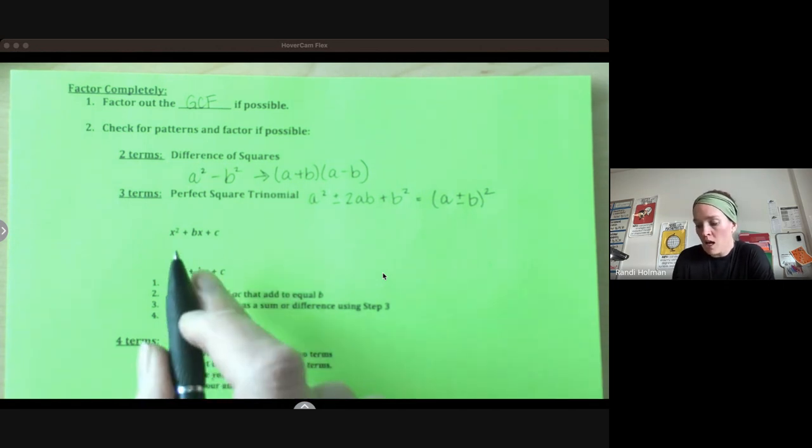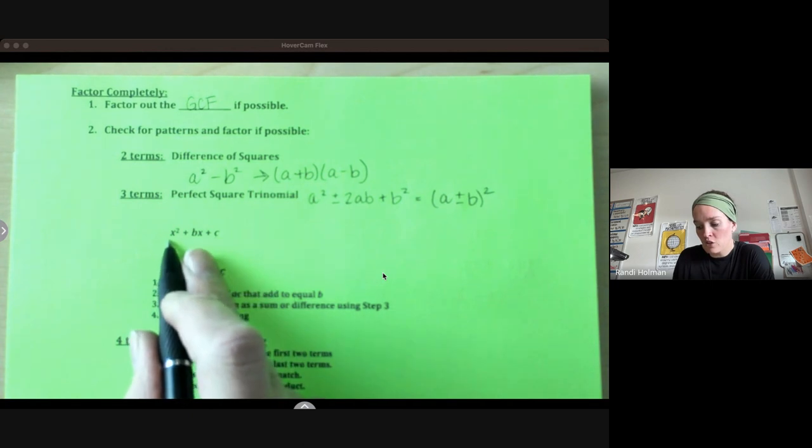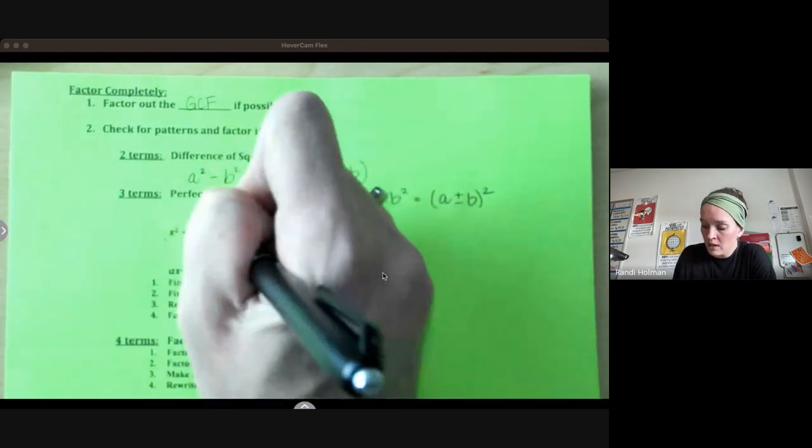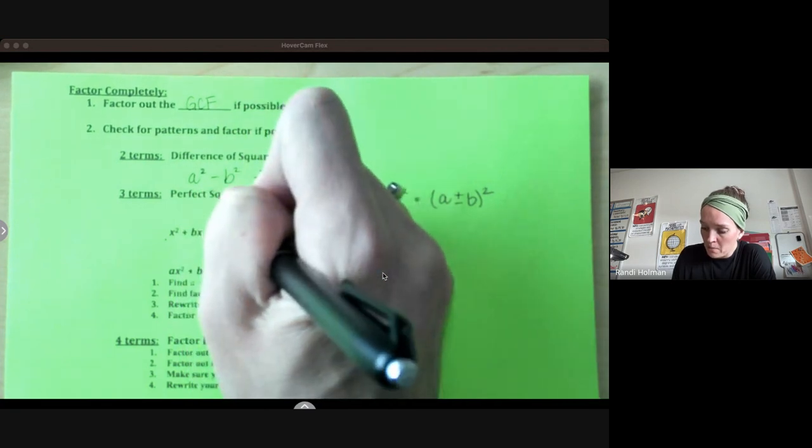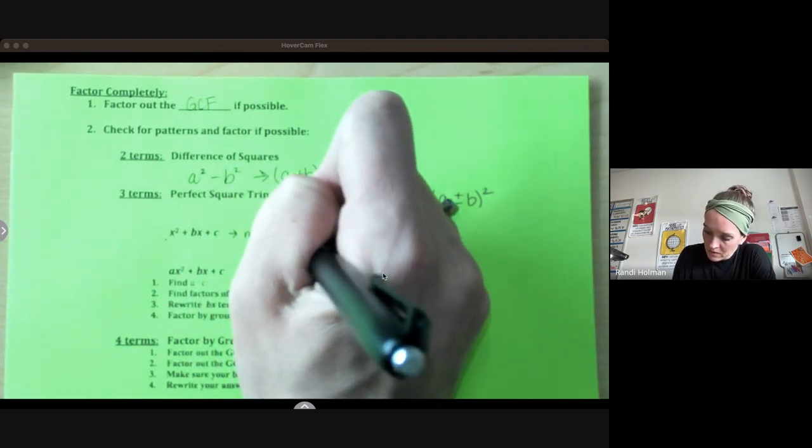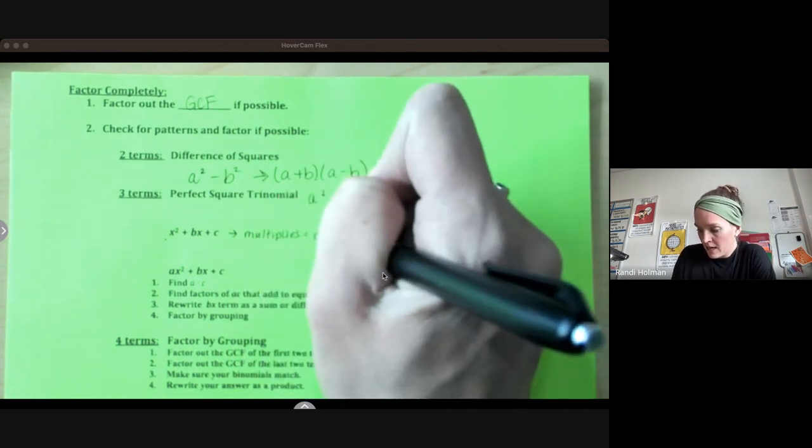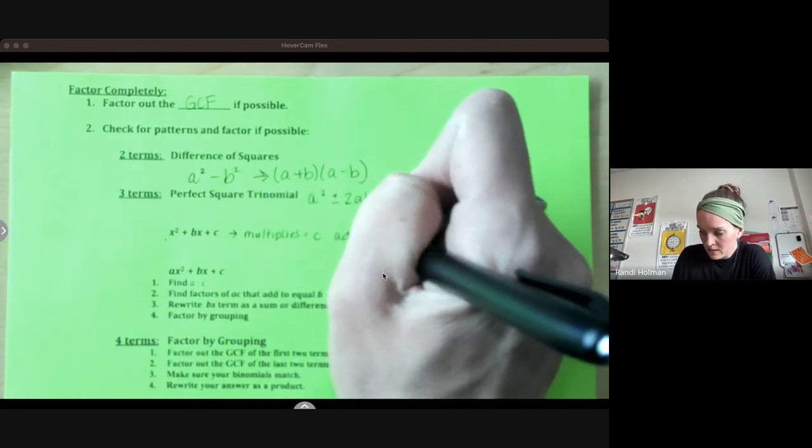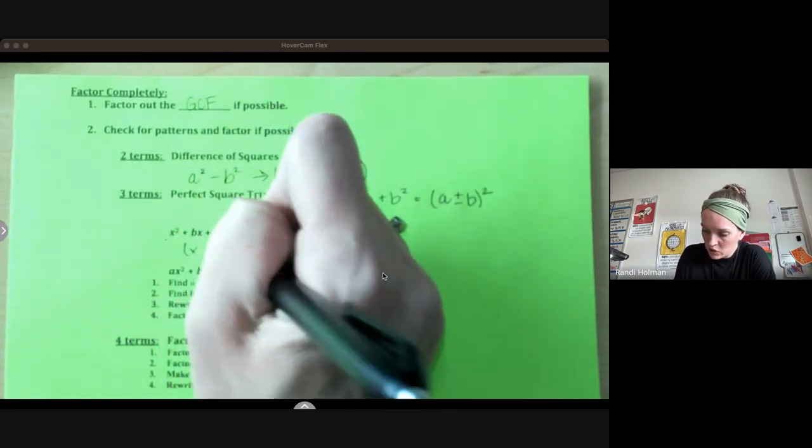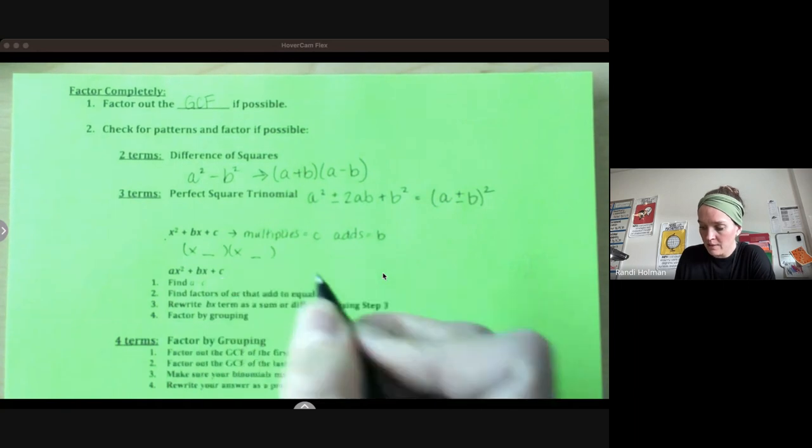And if you have a trinomial, once you've checked for those, and your a value is one, we're just looking for what multiplies to be c and adds to equal b. And then we can just put those things into our binomials. Put those values in here.